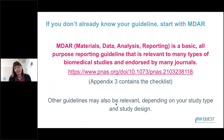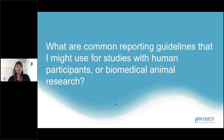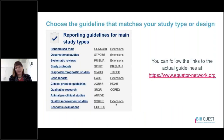Other guidelines may be relevant depending on your study type and design. For studies with human participants or animals, you want to choose the guideline that matches your study type: CONSORT for Randomized Controlled Trials, STROBE for Observational Studies, and PRISMA for Systematic Reviews. However, there are a number of other common guidelines listed on the Equator Network website, and if you go to that website you can follow links to each of these guidelines.